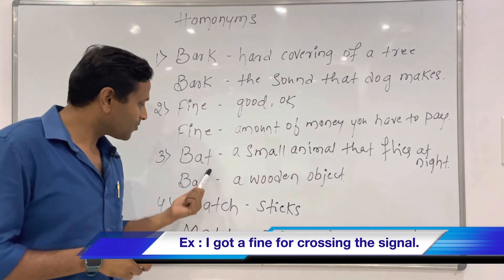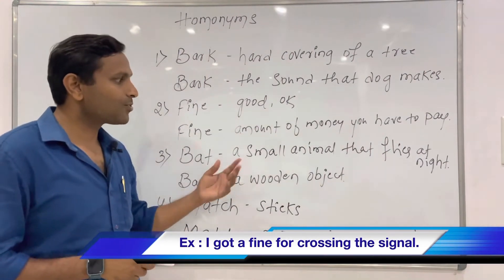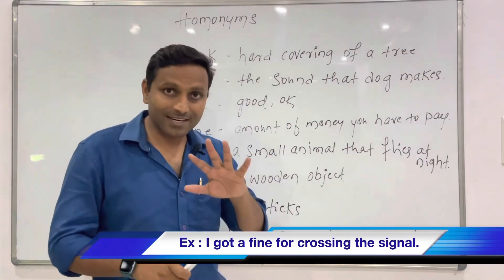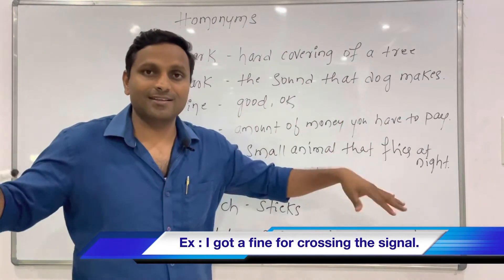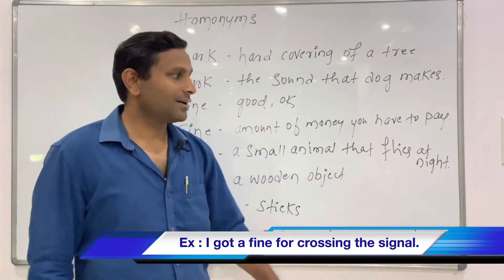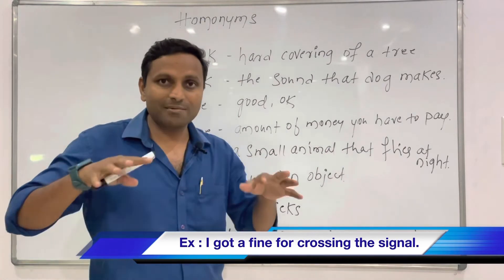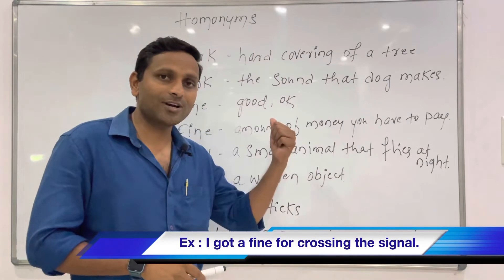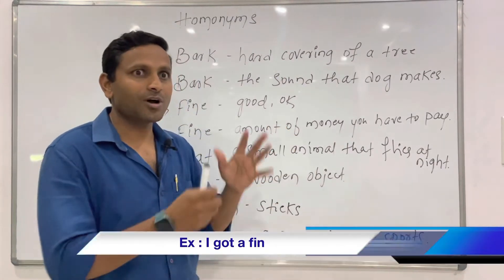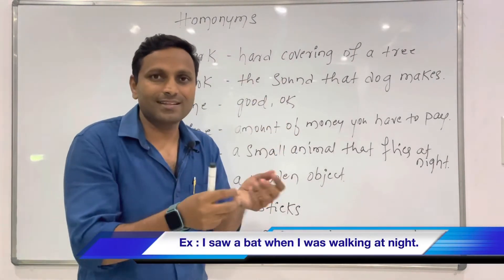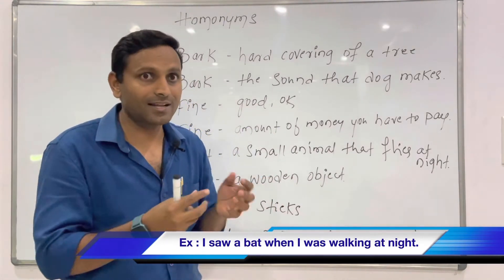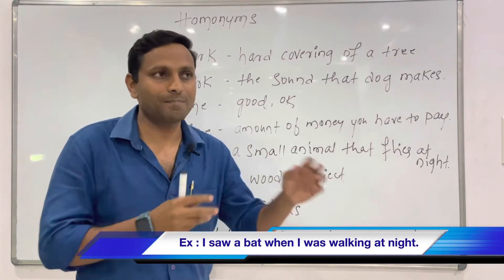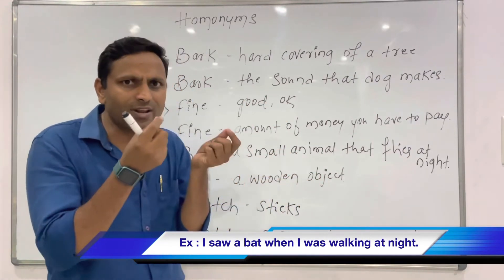One more word: 'bat' and 'bat'. One meaning of bat is a small animal that flies at night. For example: 'I saw a bat when I was walking at night.' It is a small flying animal.